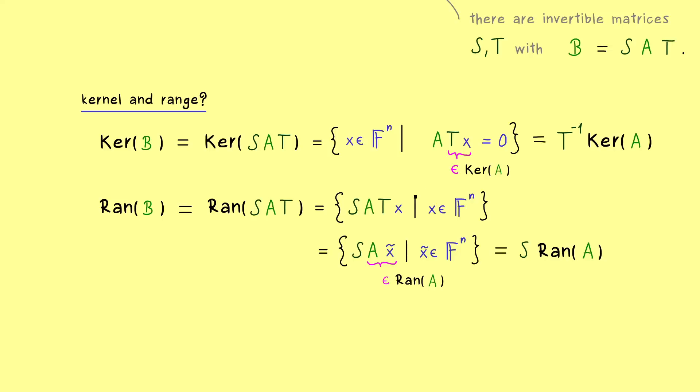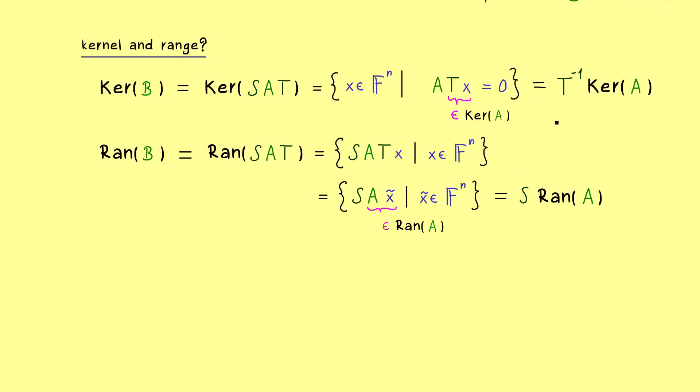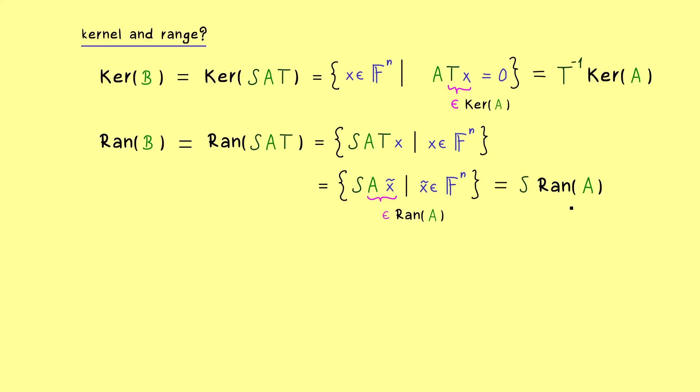So in summary we get that the kernel and the range are not invariants under the equivalence transformation. However, now we found out that the dimensions of the two things are invariant. Simply because the invertible matrix here on the left will not change the dimension of the space.